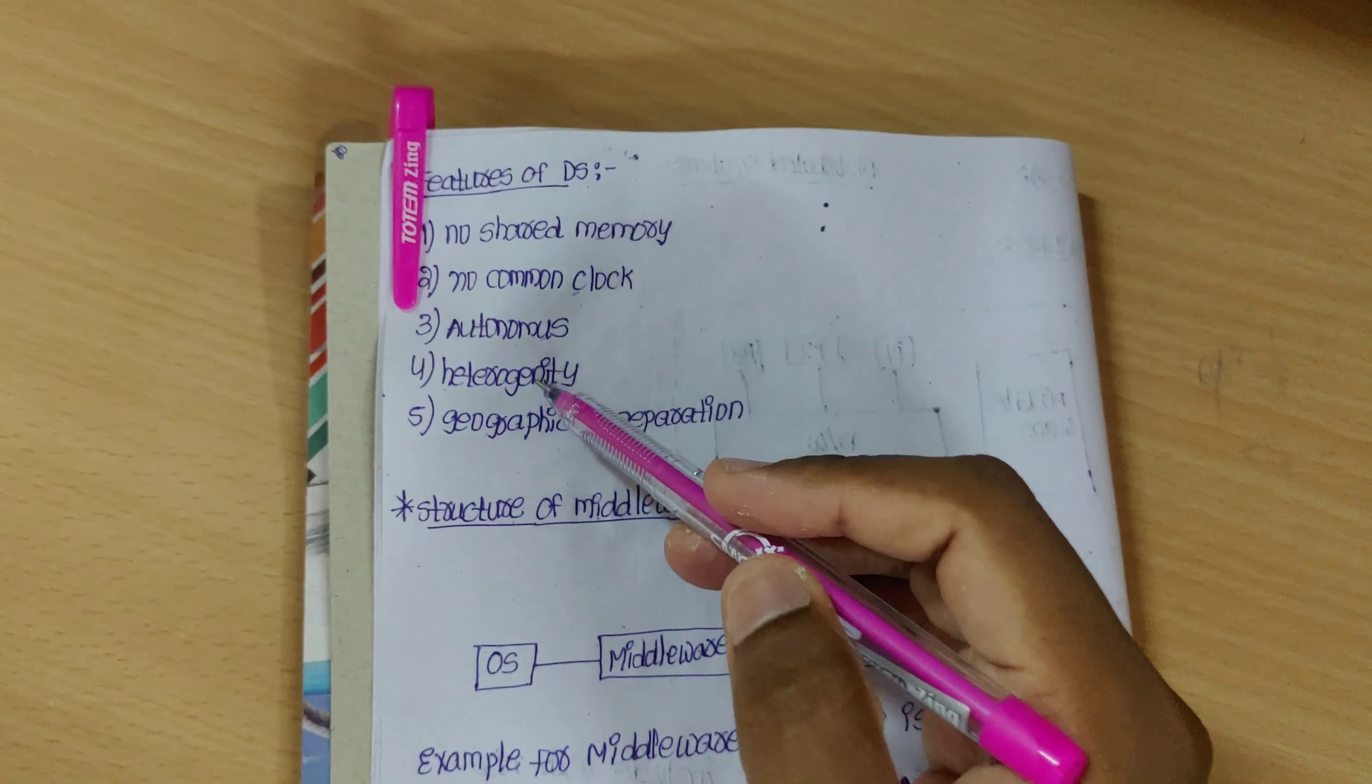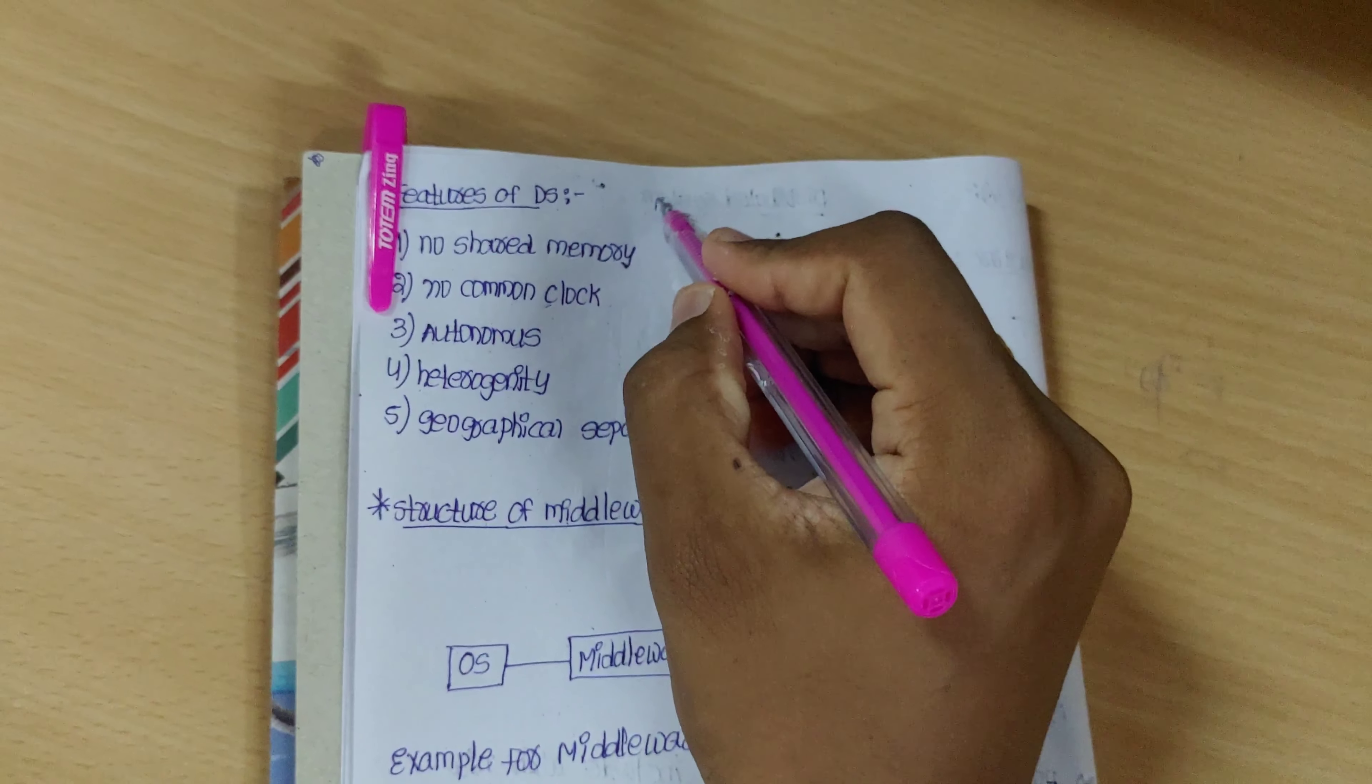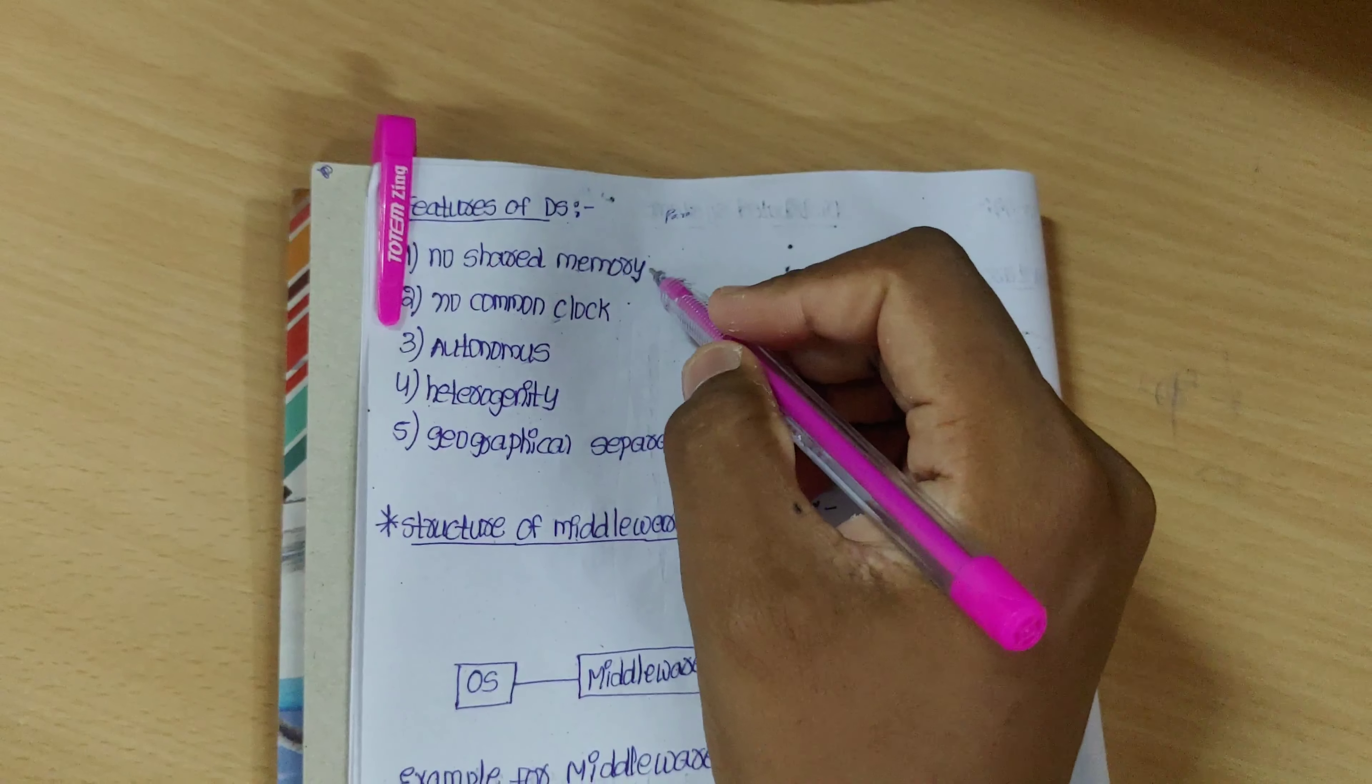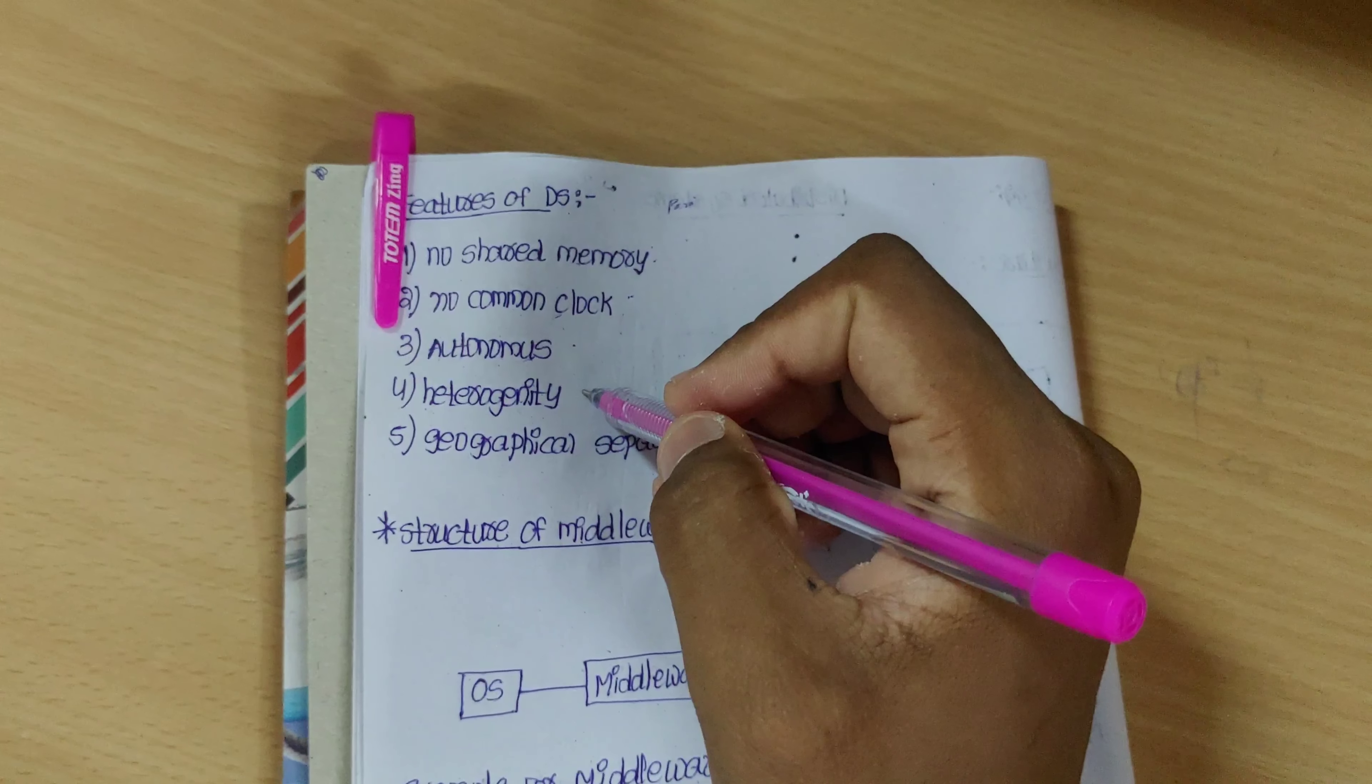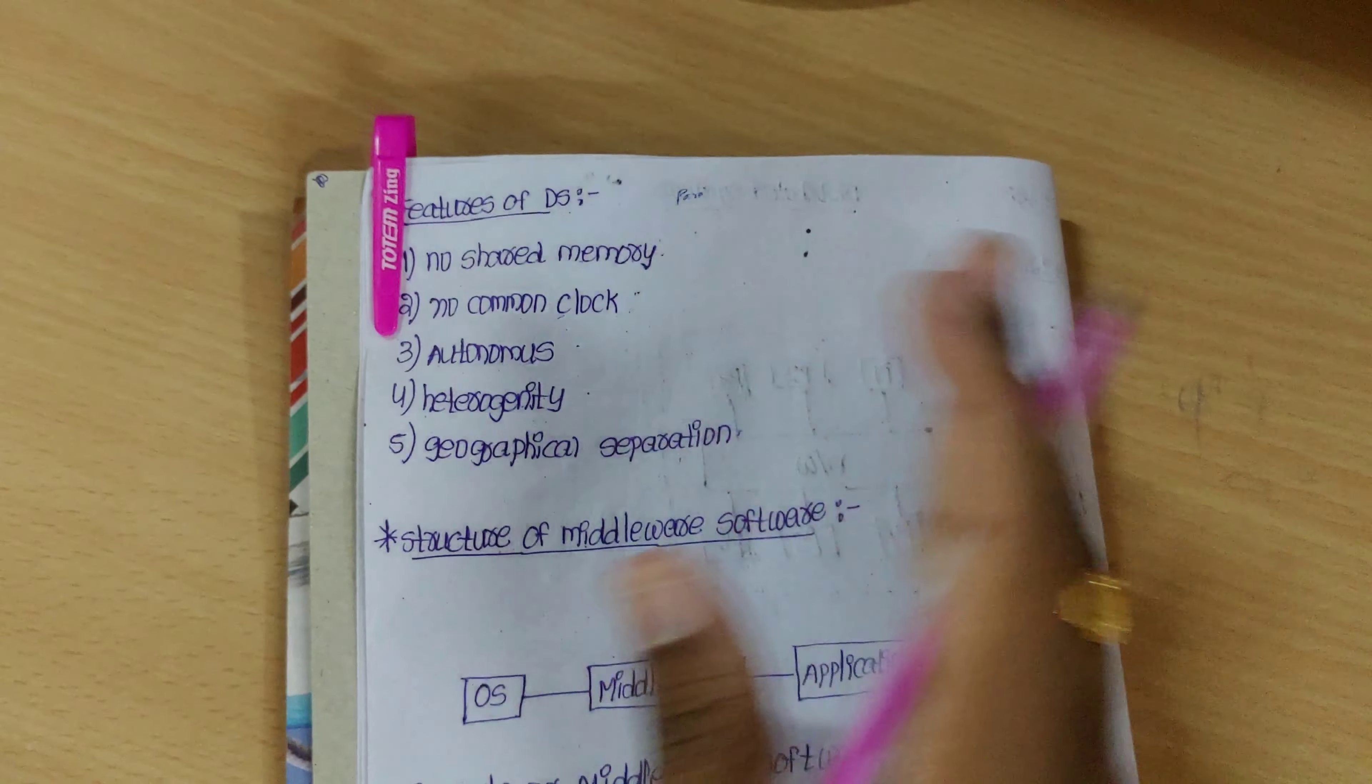In the parallel system, we will share the memory. In memory sharing, there are ten systems stored in one system. Unlike DS, there is no shared memory. There is no common clock. There are only ten systems stored in one system. There is no problem with DS.